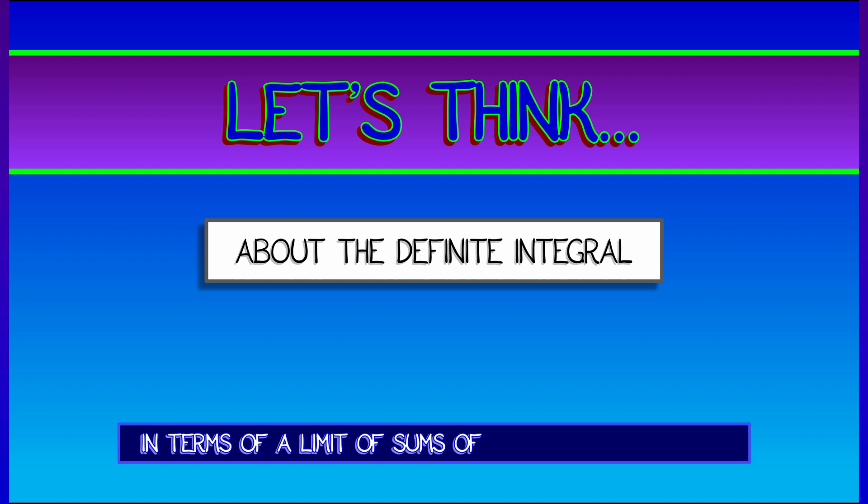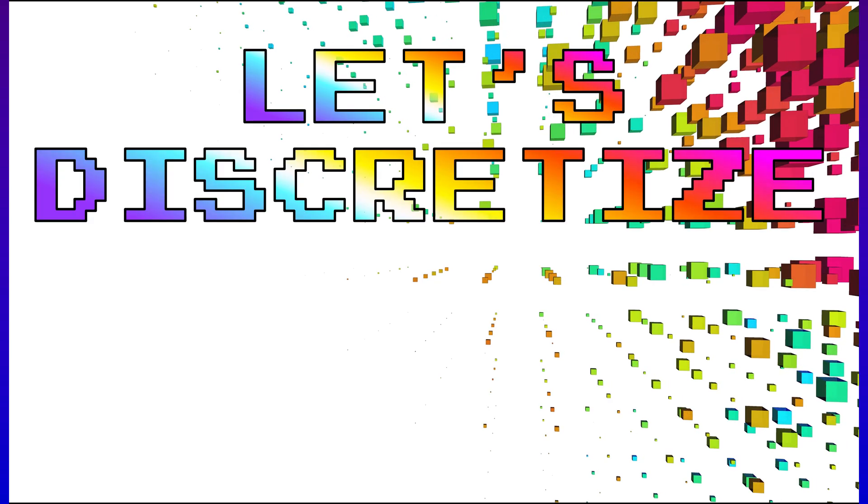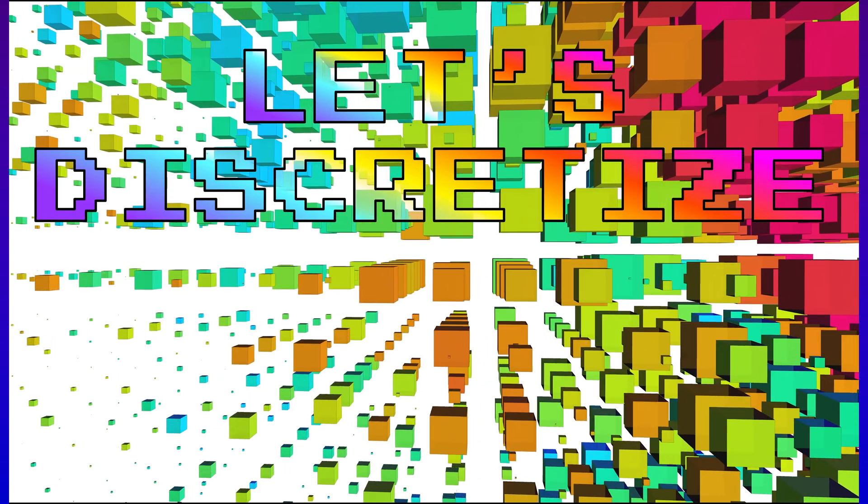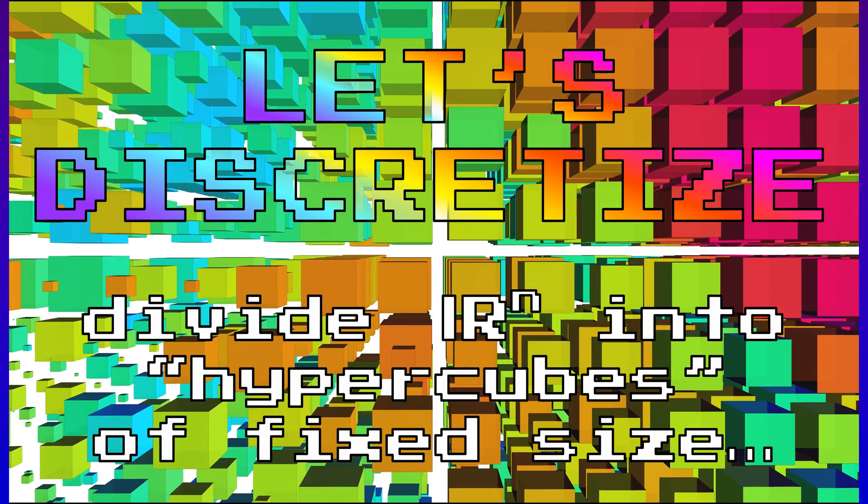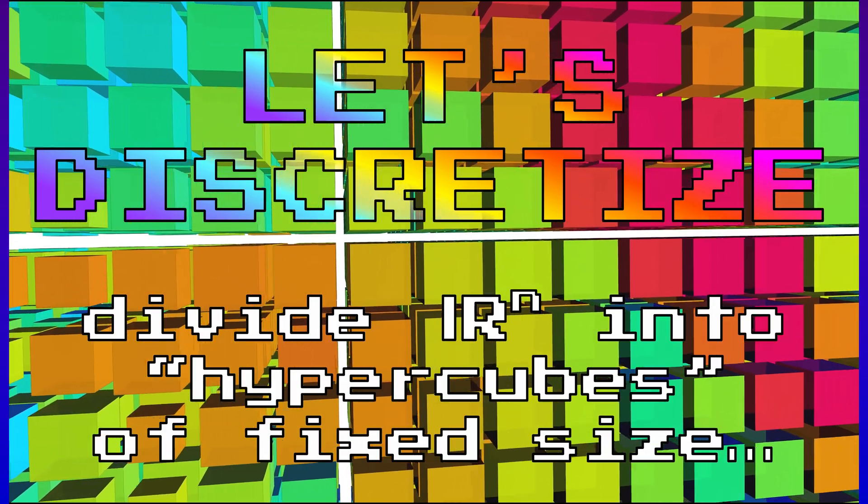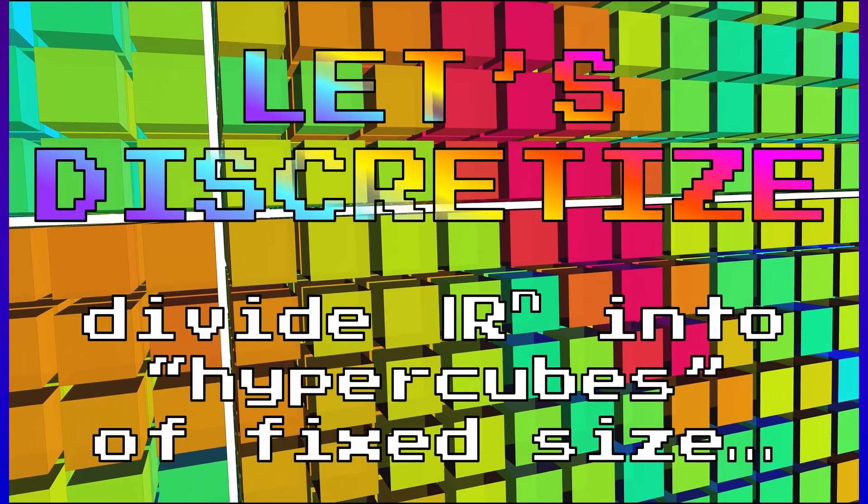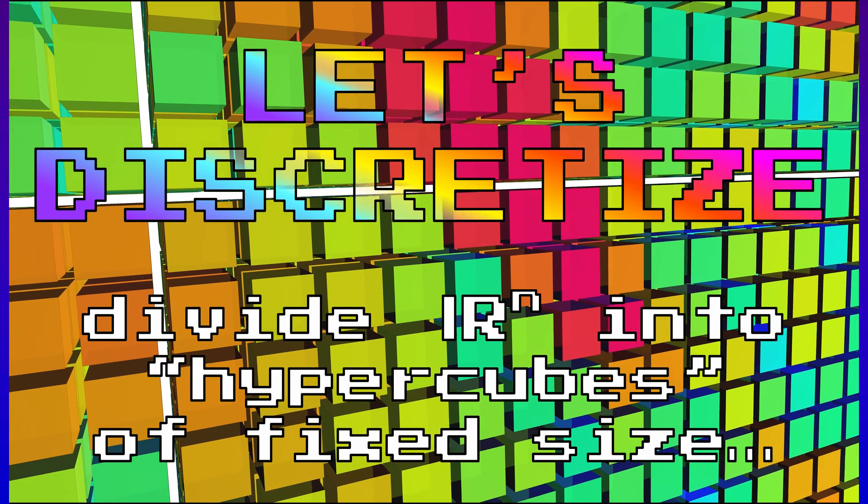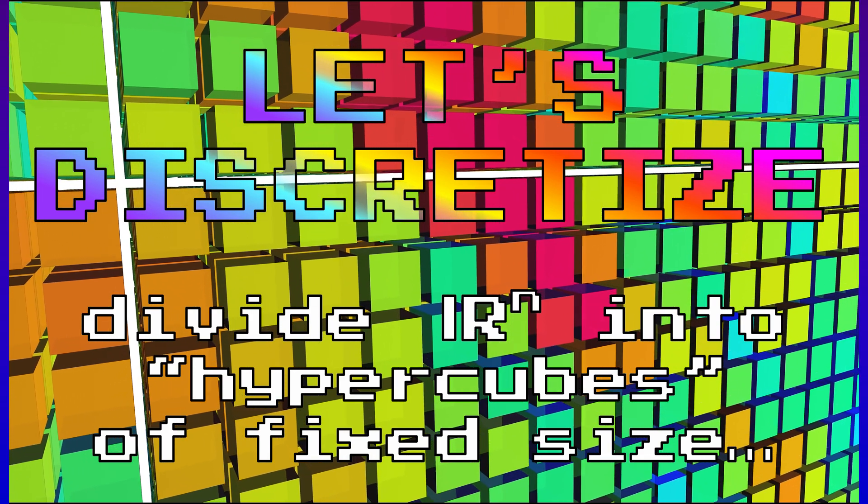a limit of Riemann sums. We want to take a similar limit of sums over ever-smaller pieces or samples. So when we're working in n-dimensional space, let's discretize. Let's divide our n up into cubes, or in general, hypercubes of some fixed size, and then let's shrink that size.